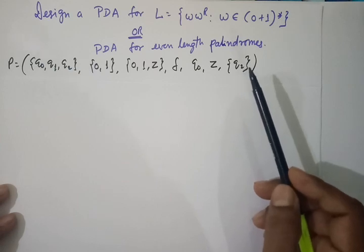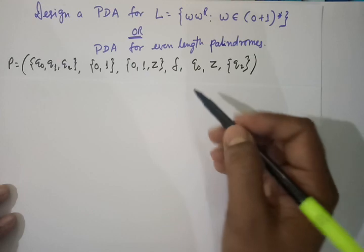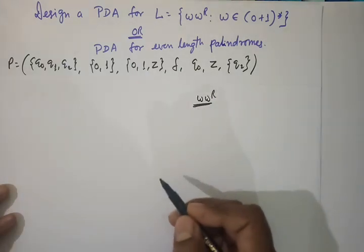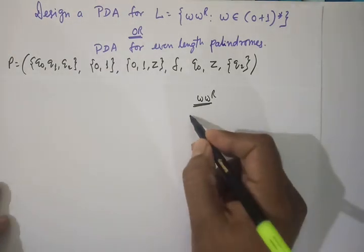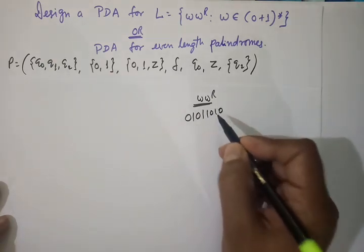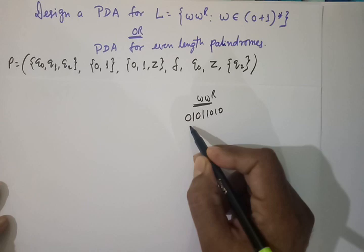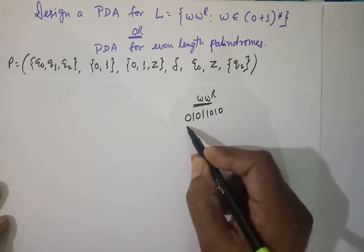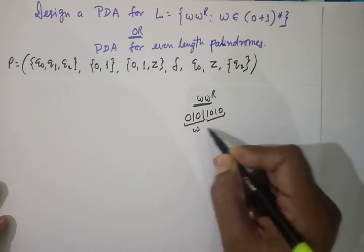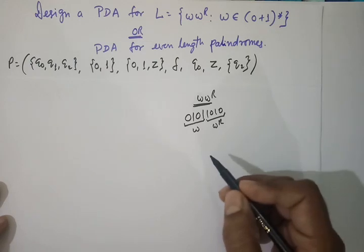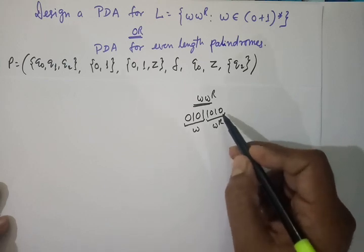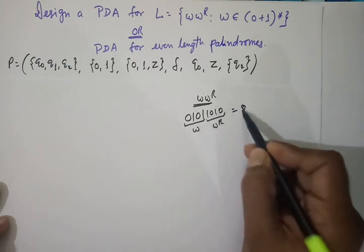Let's look at some strings of this form. For the string 0,1,1,0 — this is WW^R. We can see the W part is '01' and the WR part is '10', which is the reverse of W. So this string should be accepted. The length of this string is 4, which is even.